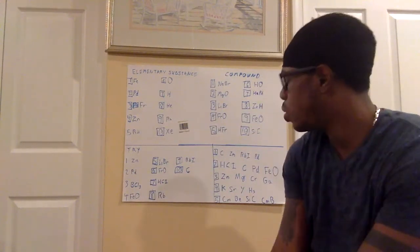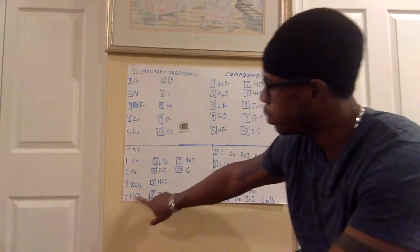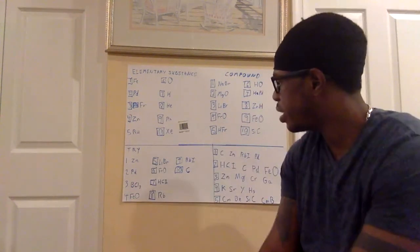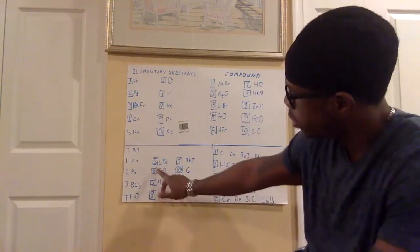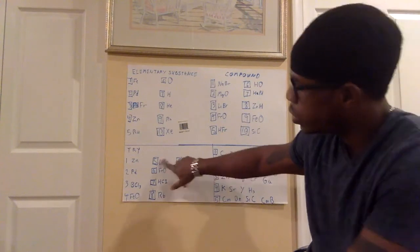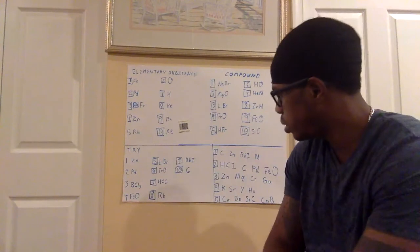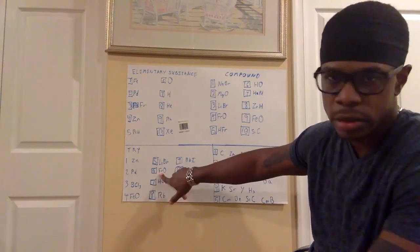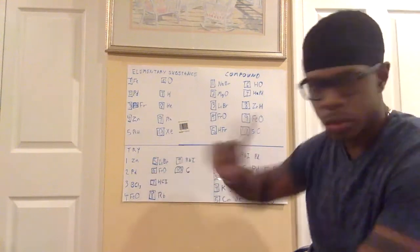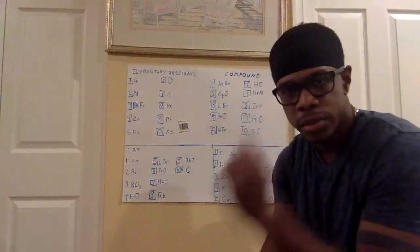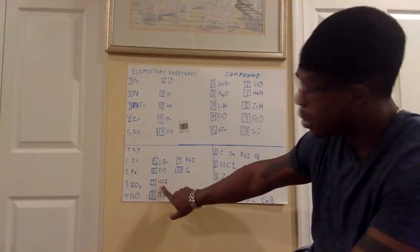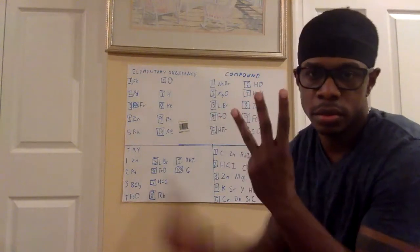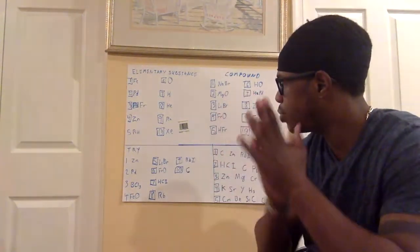Number four: FeO — Fe is iron, one atom, and O is oxygen, another atom — two atoms, which is a compound. Number five: LiBr — Li is one atom, Br is one atom — that's two, so number five is a compound. Number six: FrO — Fr because R is common or small, Fr is one atom by itself, and O is another — two atoms, a compound. Number seven: HCI — capital H, capital C, and capital I. That is actually three atoms — H, C, and I — three different atoms, so that would be a compound.